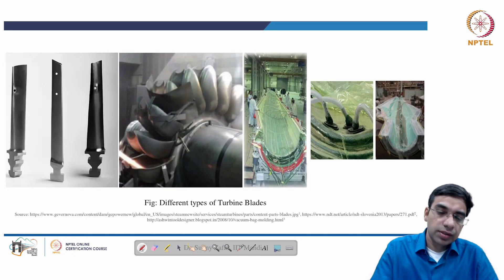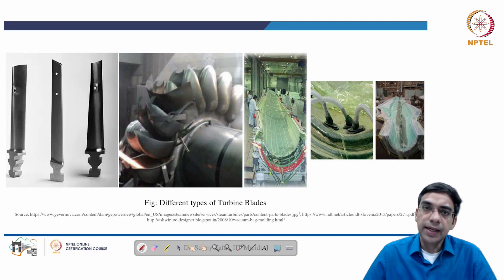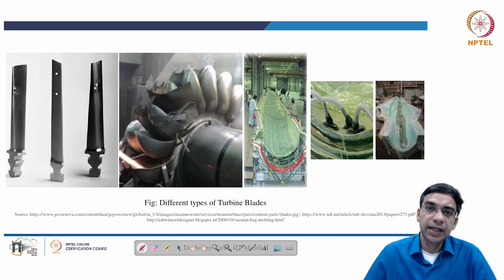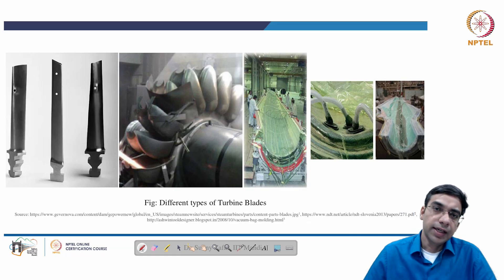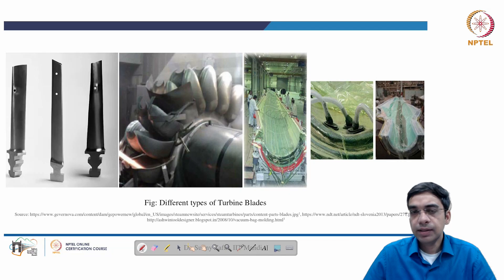Specifically, this course will revolve around studying the service conditions of each of these turbines, then identifying the appropriate material selection for each respective service condition, and then mapping the material selection to the manufacturing process for each turbine. The course is divided into four parts covering each turbine, correlating its service condition, material selection, and manufacturing process.